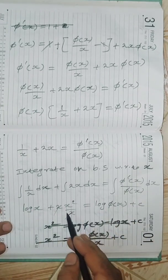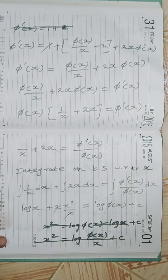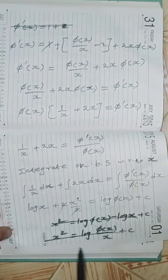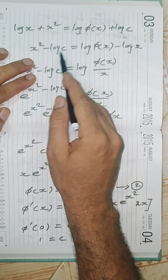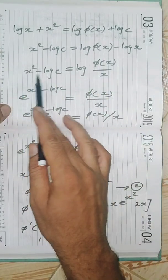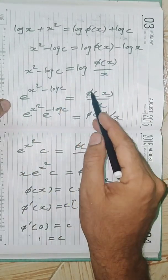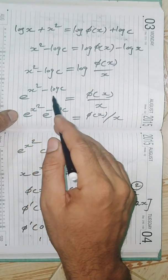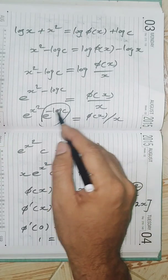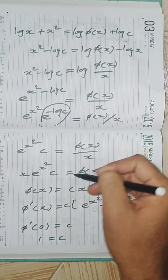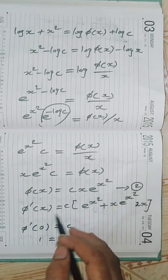Integrating both sides: ∫ π'(x)/π(x) dx = ∫(1/x + 2x) dx. Left side gives log|π(x)|. Right side gives log x + x². So log x + x² = log π(x) + log C. Rearranging: log(x/C) + x² ... taking exponentials: e^(x²) · (x/C) = π(x)/x? Simplifying: π(x) = C·x·e^(x²).